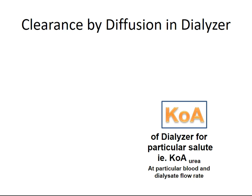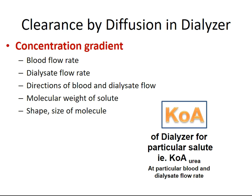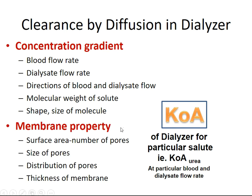Clearance by diffusion in the dialyzer depends on concentration gradient, blood flow rate, dialysate flow rate, direction of blood and dialysate flow, molecular weight of the solute, shape and size of the molecule, and membrane properties including surface area, number of pores, size of pores, distribution of pores, and thickness of the membrane. A thinner membrane has higher diffusive permeability.